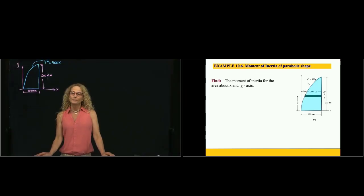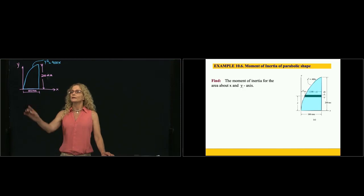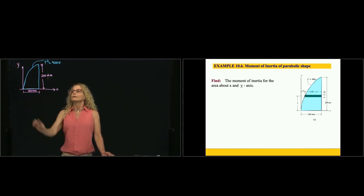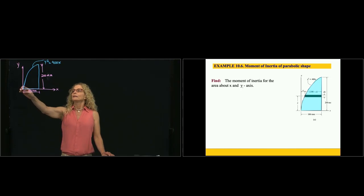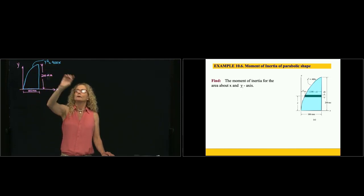This is problem 10.6, and we want to calculate the moment of inertia about the x-axis and the y-axis of this plate. The plate has the shape defined by the curve y squared equals 400x.